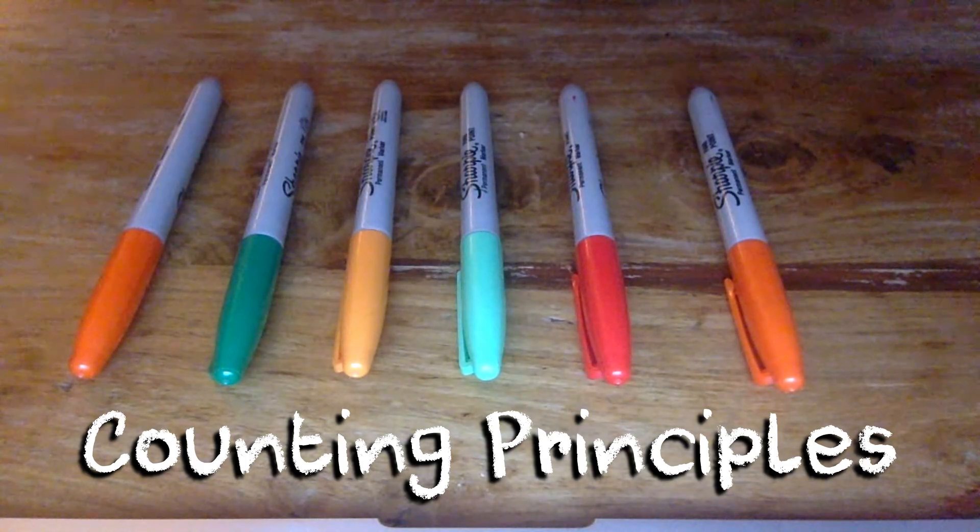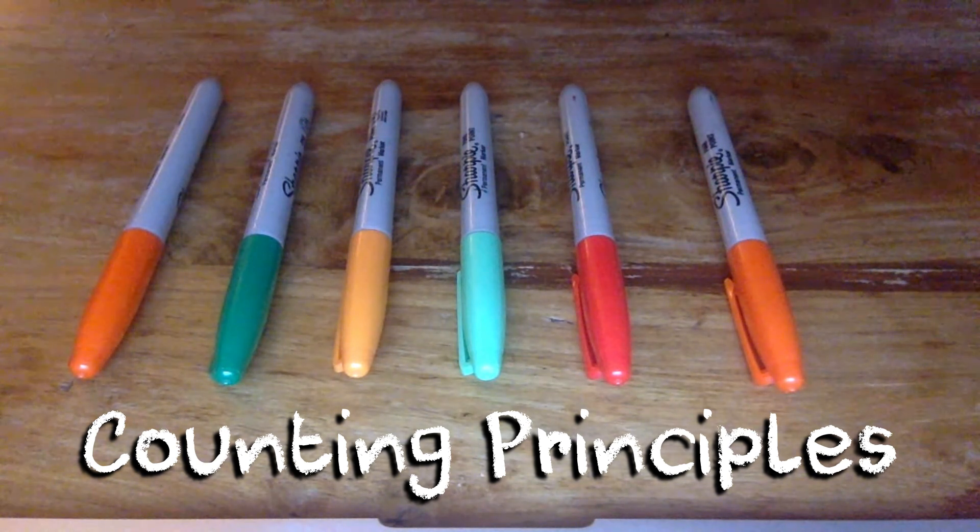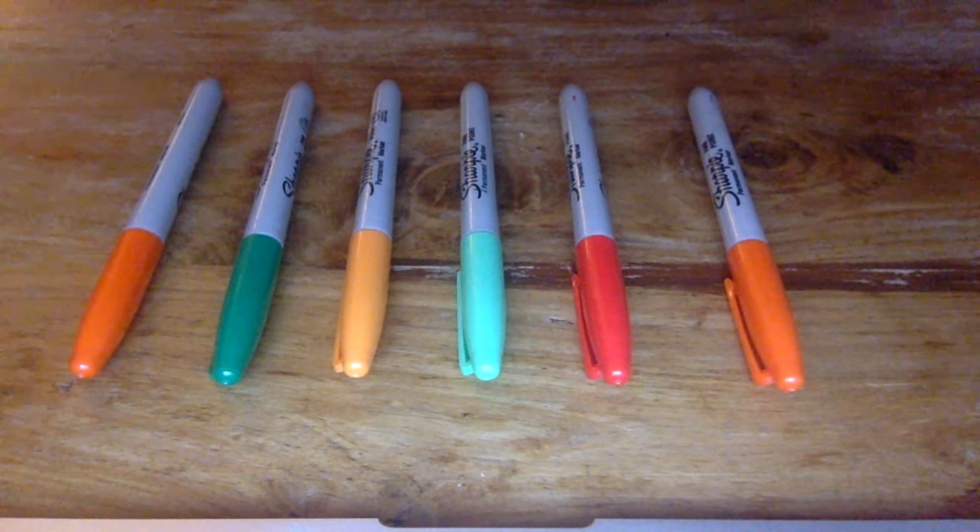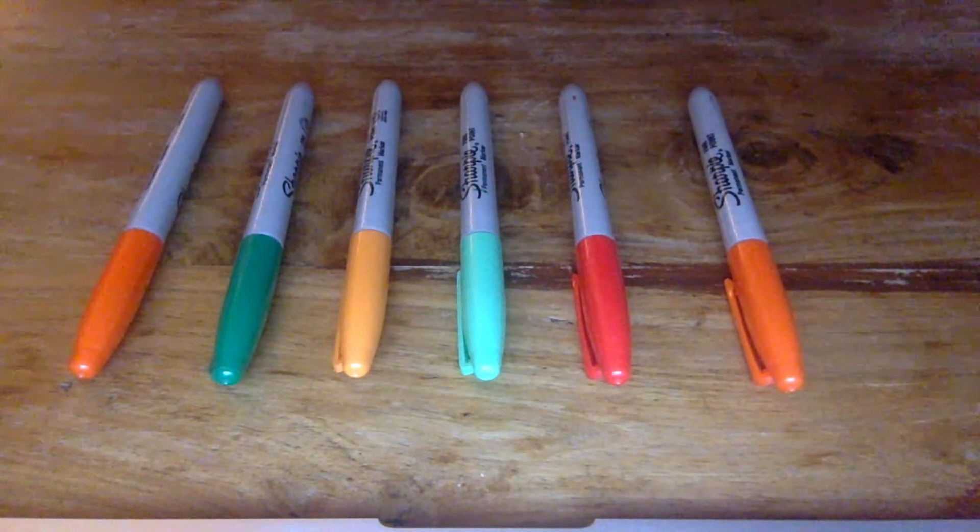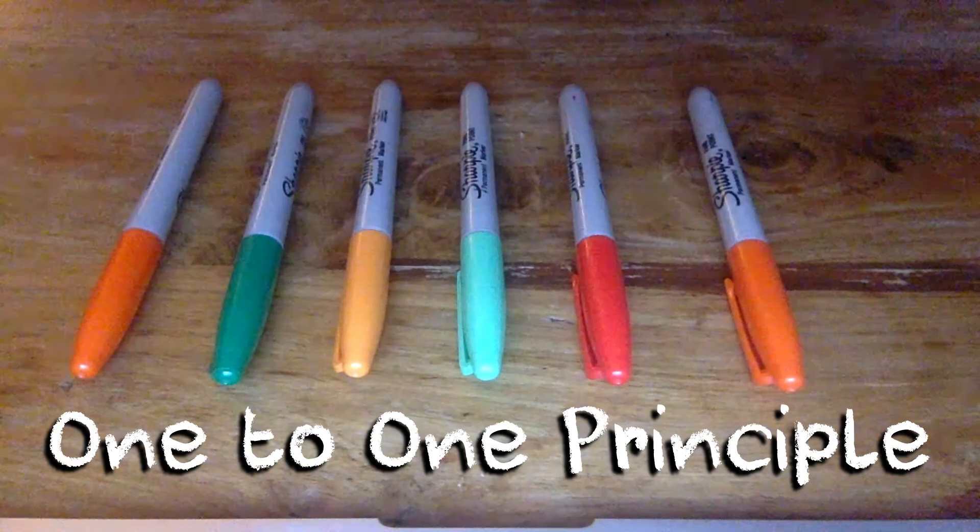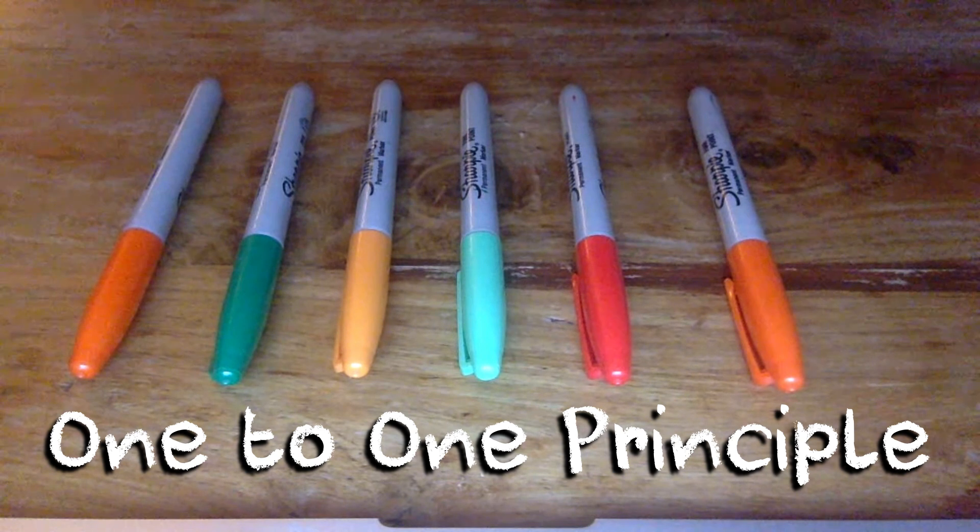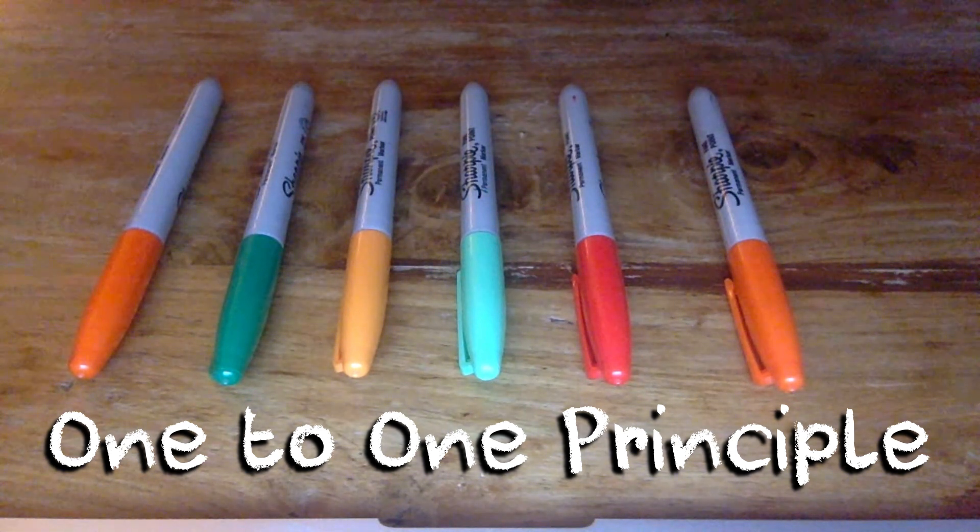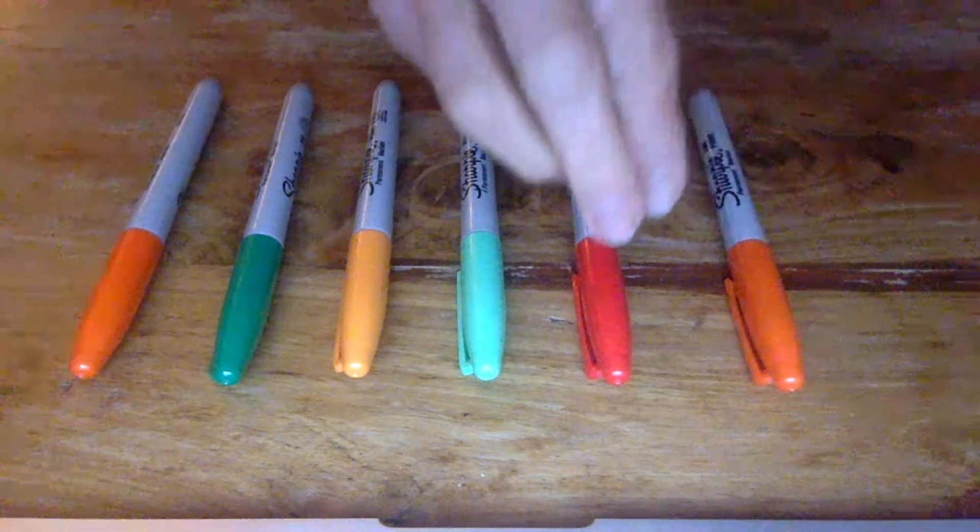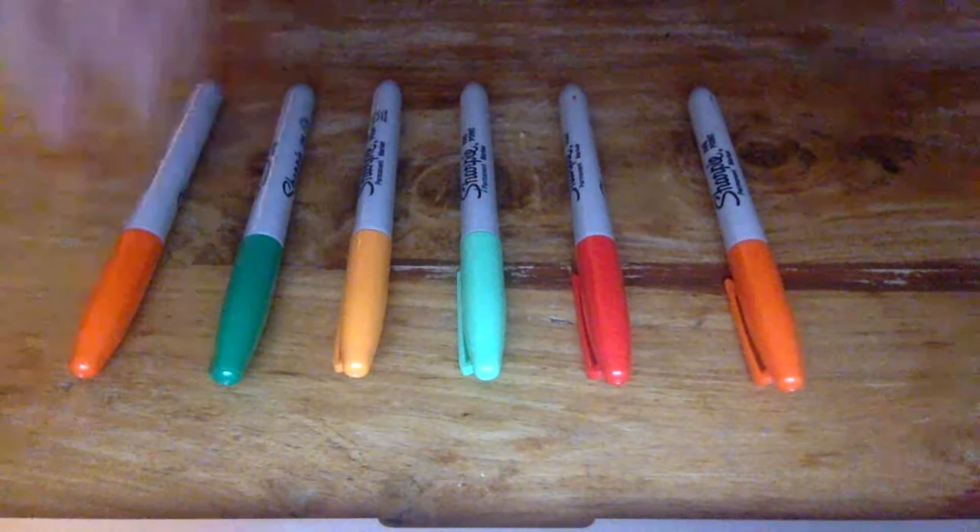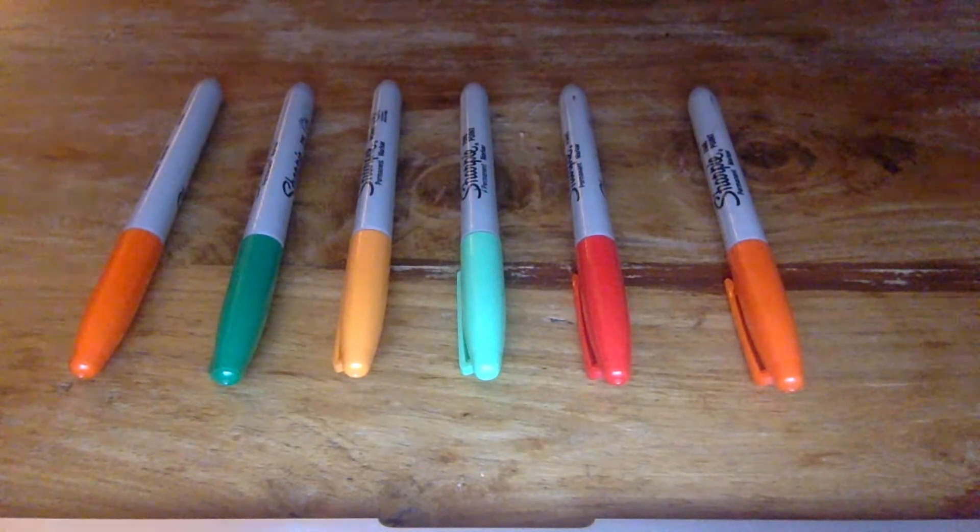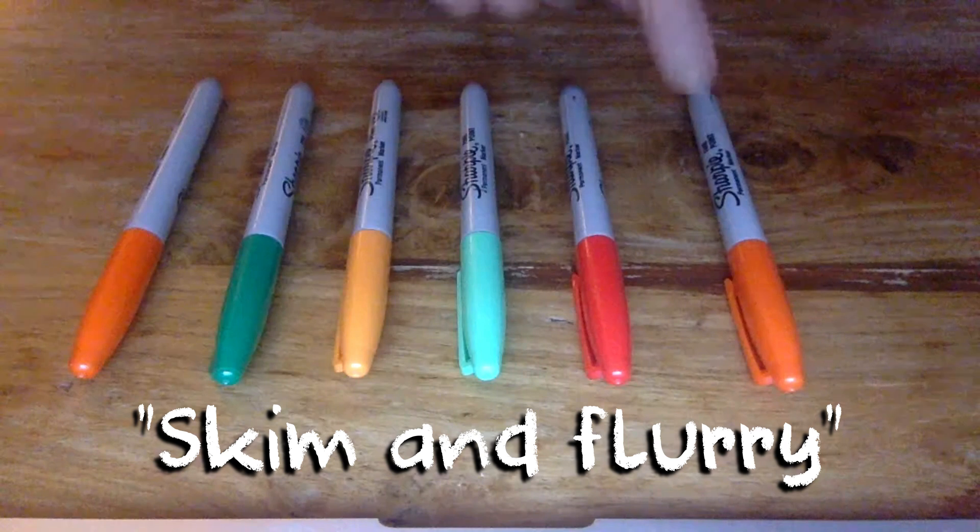Children in reception need lots and lots of practice to help them understand and really embed the fundamental counting principles. And we usually do this through their play and through the activities that we've set out for them. The first two counting principles kind of go hand in hand. The one to one principle refers to the need to count each object in a group once and only once. This is often something that young children need a lot of practice doing. One, two, three, four, five, six. They have a tendency to skim and flurry over numbers. They skim, they count too quickly and miss out an object. One, two, three, four.